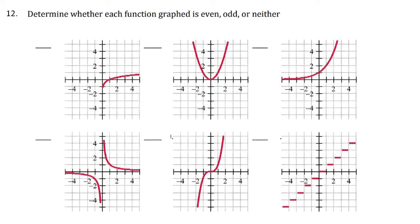We need to decide whether functions are even, odd, or neither by looking at how they are graphed. The first one is not symmetric about anything, so that is neither. The next one is symmetric about the y-axis, so that is even. The third is not symmetric about any axis or the origin, so neither. The fourth is symmetric about the origin, so that is odd. The fifth is also symmetric about the origin — odd. And the last one is a step function, but it is also symmetric about the origin, so it is also odd.